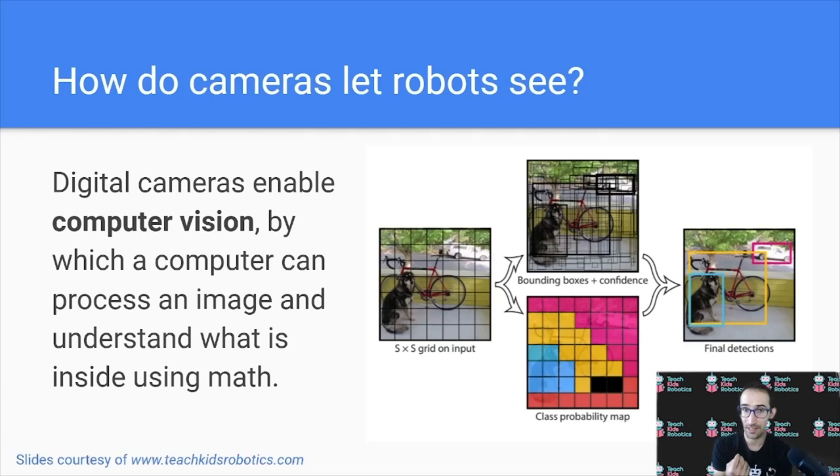Consider the image on the right. We can separate this digital image into a grid, and then we can perform mathematical operations on that grid in order to classify or identify what is in the image.